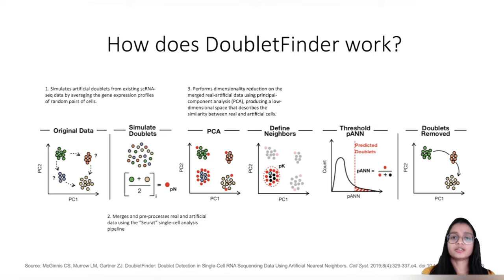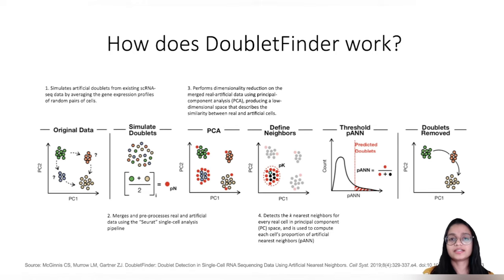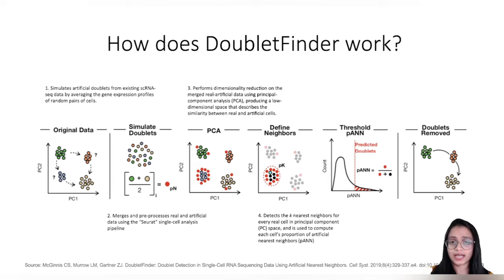A linear dimensionality reduction is performed on the merged artificial and real data, resulting in a PCA space where artificial doublets co-localize based on similarity with real cells. Next, it detects the nearest neighbors for each cell in principal component space and computes the proportion of artificial nearest neighbors. This step is highly dependent on the pK parameter, and DoubletFinder performance is highly dependent on pK, so it's essential to find the optimal pK value.